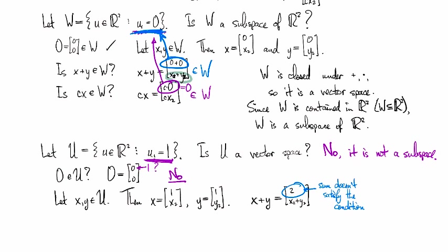And similarly, if I look at cx, well, it needs to work for any scalar c. So if I can find an example of c that it fails for,